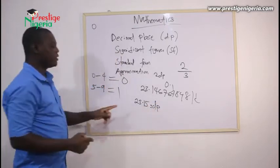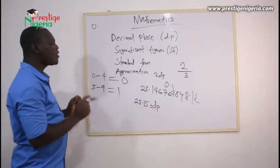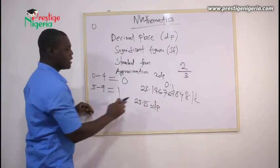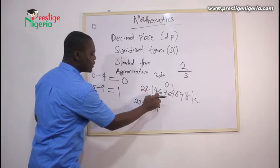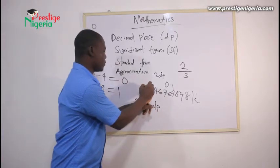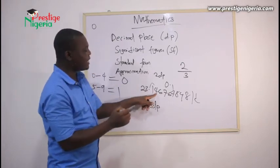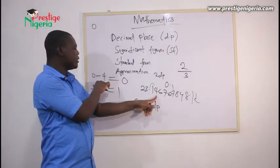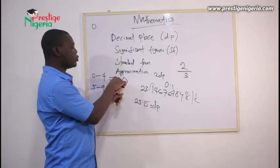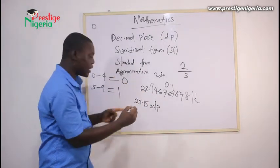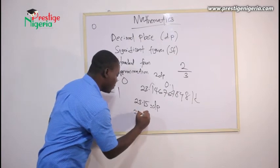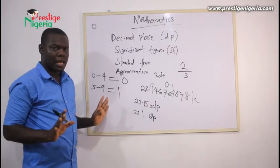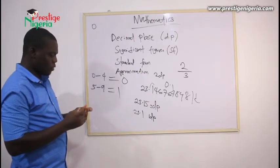Now if we go back to one decimal place with 23.1467, we look at the first digit after the decimal point, which is 1. The next digit after that is 4, which is between 0 and 4, so we approximate to zero. Zero plus one is still one, so the answer to one decimal place is 23.1.